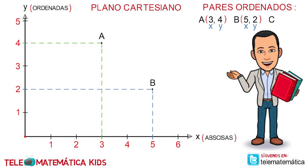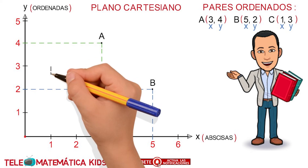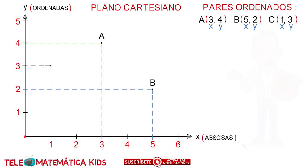Y por último, el punto de coordenadas (1, 3). De igual forma, identificaremos el primer valor con la letra X, que corresponde al eje de las abscisas, y el segundo valor con la letra Y, que corresponde al eje de las ordenadas. Luego, trazamos una línea discontinua perpendicular al eje X que pase por el valor 1, y trazamos una línea discontinua perpendicular al eje Y que pase por el valor 3. En la intersección de ambas líneas se encuentra el punto identificado con la letra C.